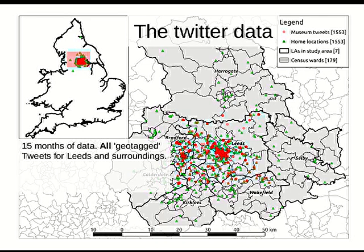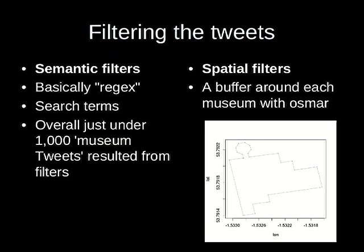How do we go from a million tweets about anything at all to ones specifically about museums? I used two systems: semantic filters and spatial filters. The semantic filters link back to the previous talk on natural language processing — basically a sophisticated version of regex, regular expressions — where you can search terms and include different spellings. The spatial filter, which I think is in some ways more important, validates whether a tweet is actually about what we think. We created a buffer of 50 metres around each museum using a package in R called Osmar; if a tweet was within that buffer, it's highly likely to be about that specific museum.